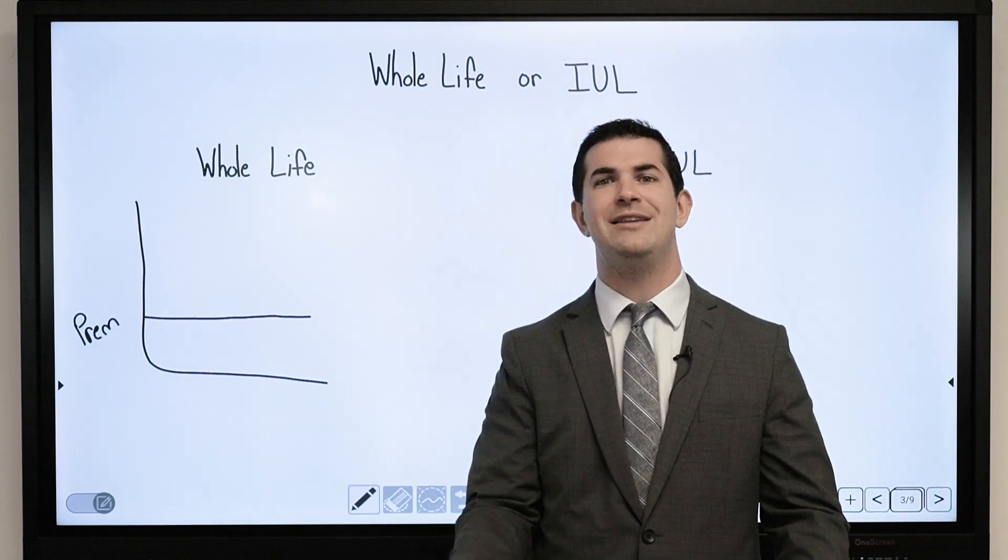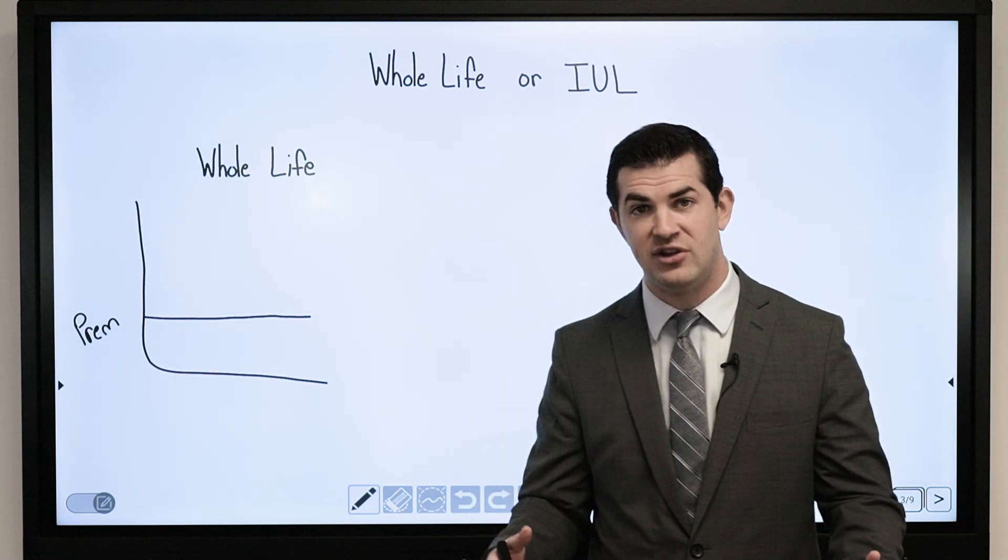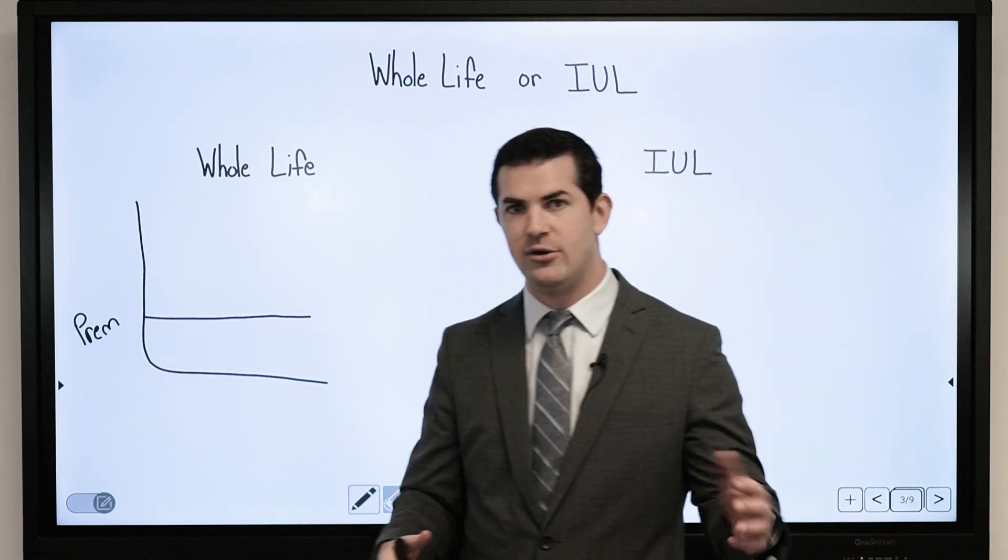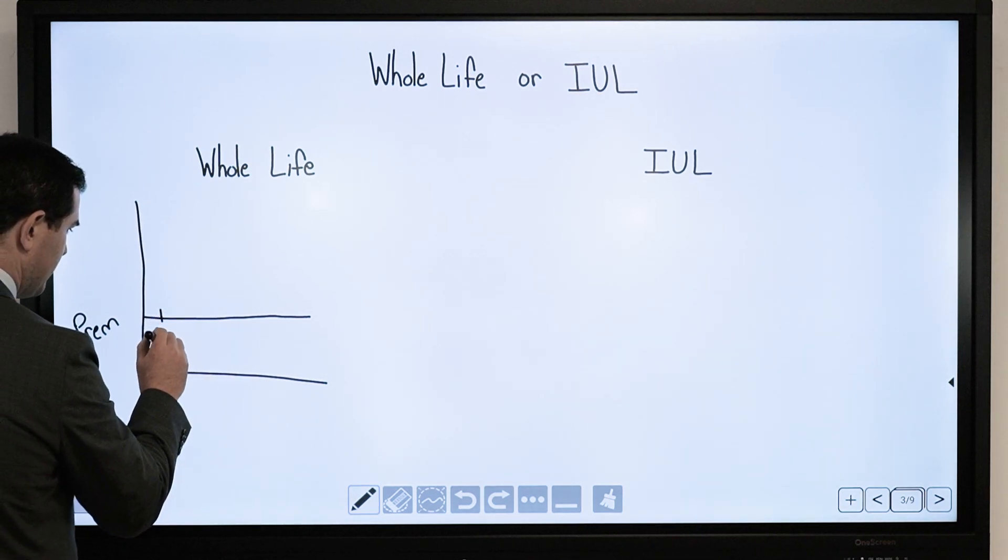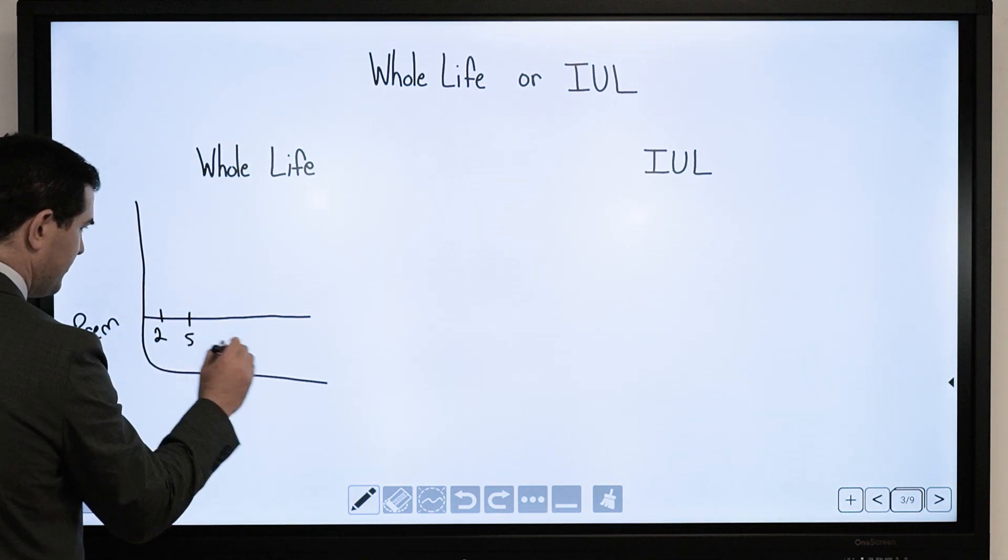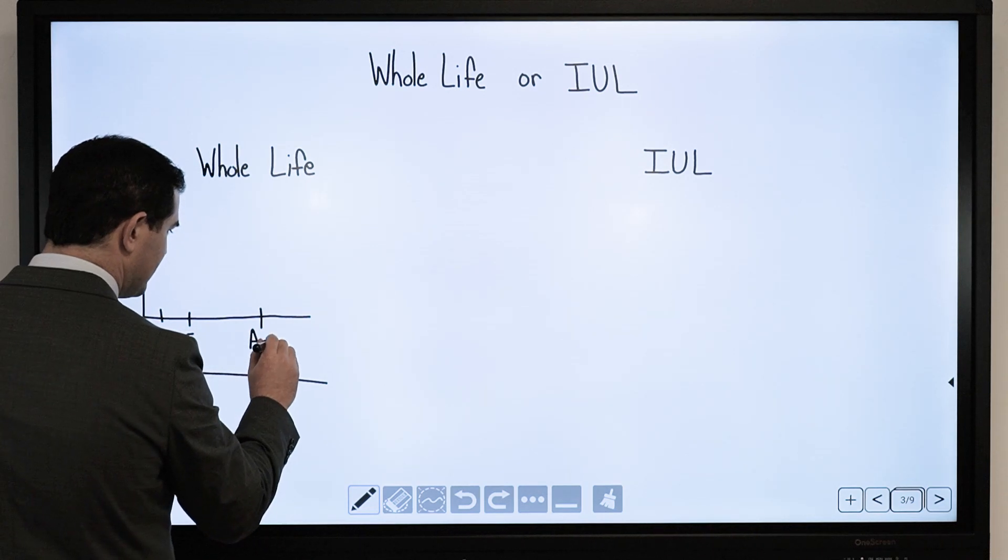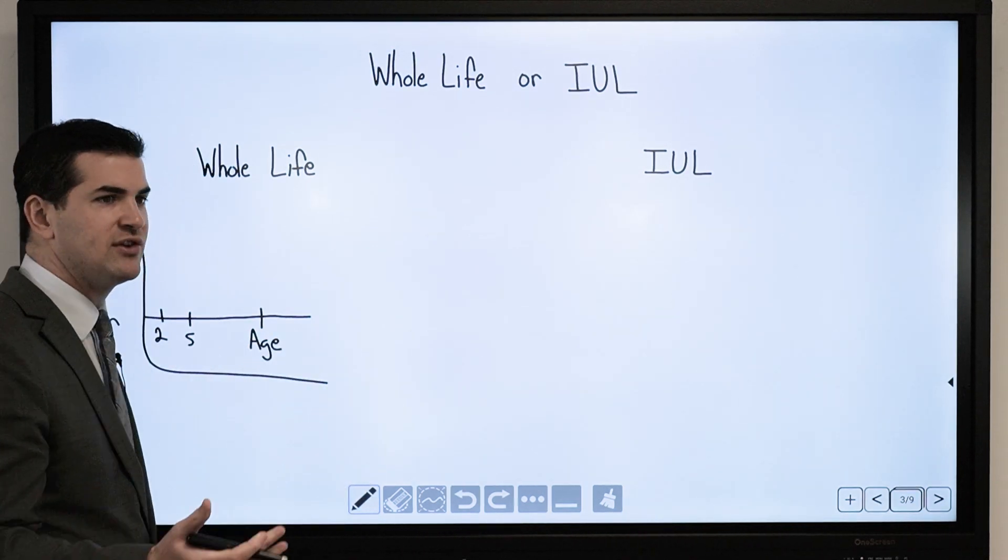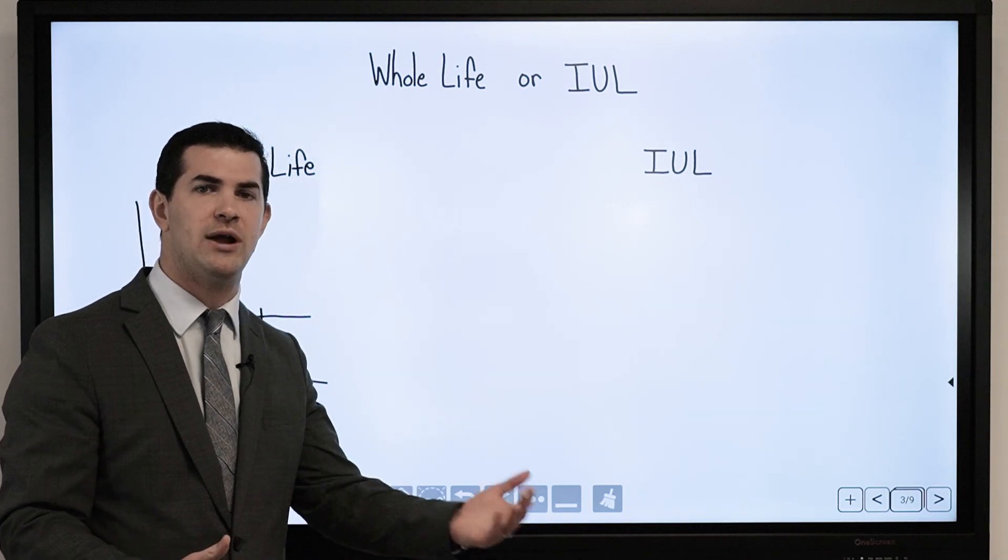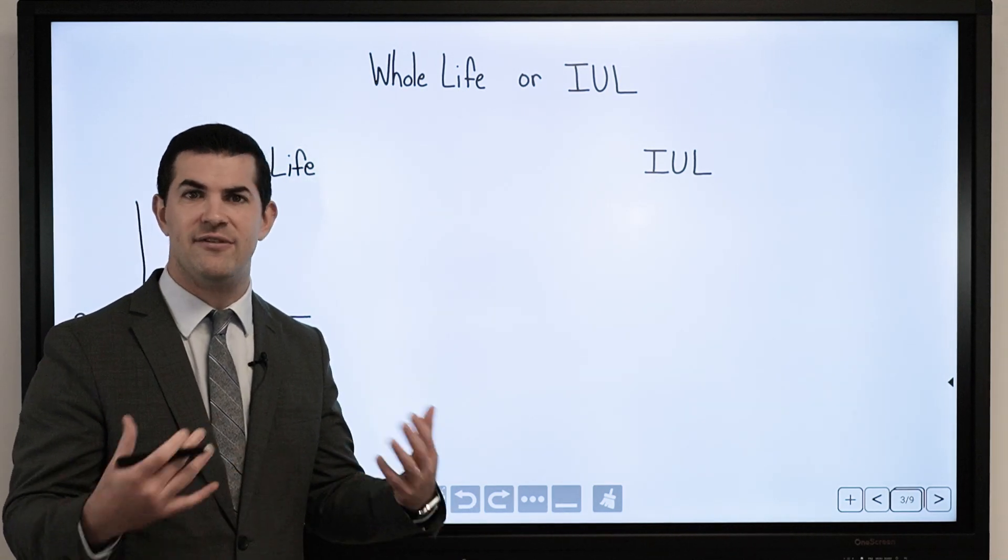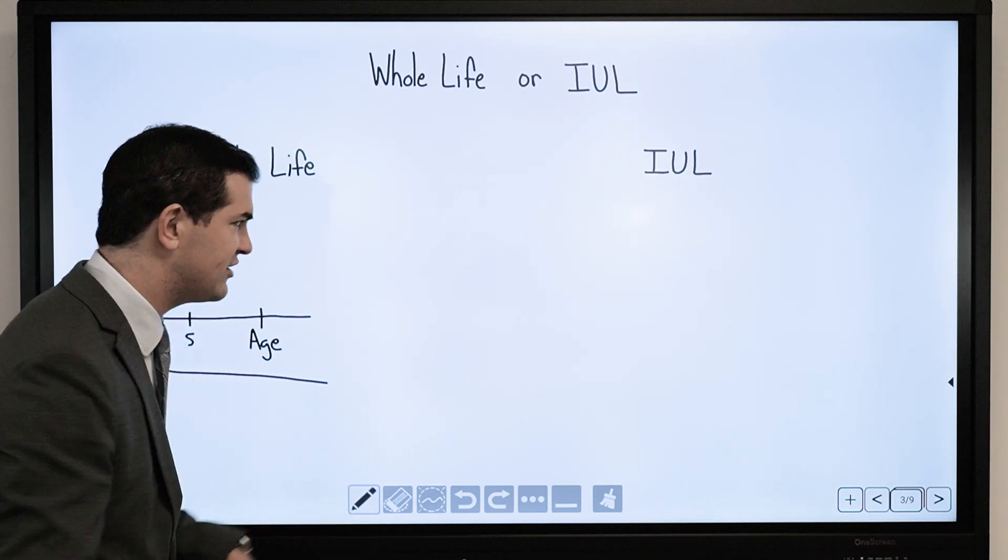Not the case at all. We can design a policy where we fund it for a very short period of time. It can be 2 years, it can be 5 years, it can be a certain age like age 65. You can also design it to be extremely flexible where we can adjust payments, add in more or less. You can use it as a flexible savings asset if designed properly.